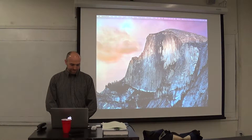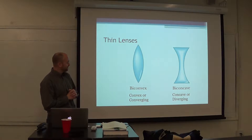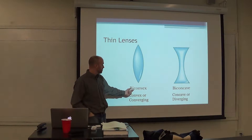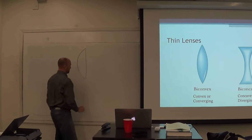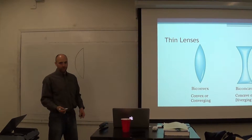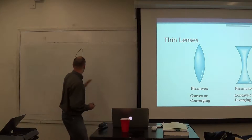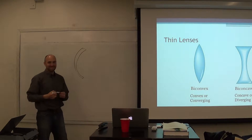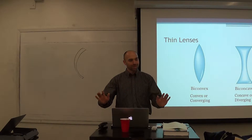Now back to what we are supposed to talk about - thin lenses. This is a convex or converging lens. This one's called bi-convex - 'bi' meaning two sides. A flat side and a curved side is a converging lens, but this is a bi-converging lens, actually a symmetrical bi-converging lens. If you look at most people's glasses, they'll have a converging lens on one side and a diverging lens on the other side, so most real lenses are not symmetrical.